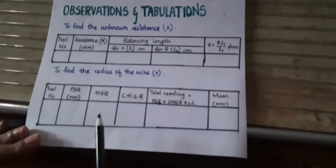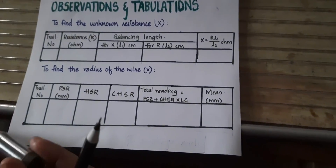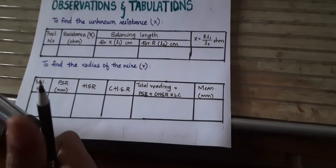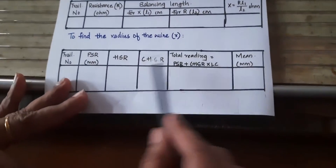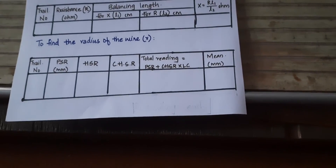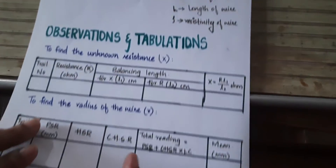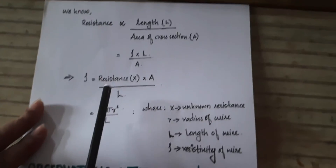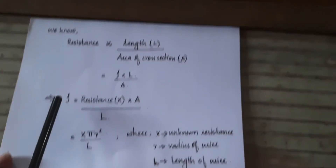Now we have one more aim: to find out the resistivity of this unknown resistance wire. To calculate resistivity, you need to take the radius of the wire using a screw gauge to measure the diameter. Note the measurements in the tabular column, check for zero error and zero correction of the screw gauge, then calculate the mean radius or mean diameter of the unknown resistance wire.